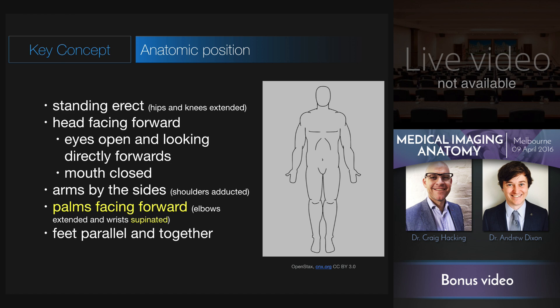I've highlighted the palms facing forwards because this is the real key concept of the anatomic position. By having the palms supinated — facing forwards — it allows the radius and ulna to run parallel.